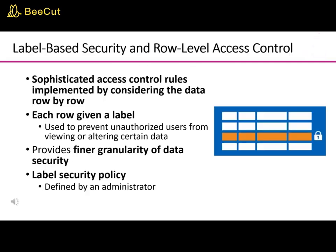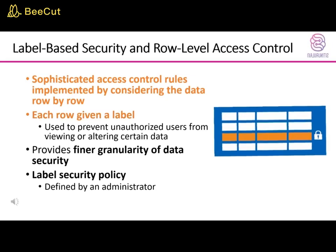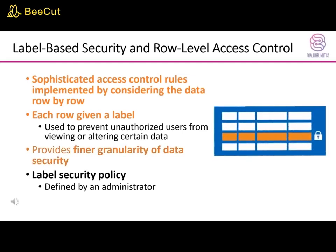Many mainstream RDBMSs currently use the concept of row-level access control, where sophisticated access control rules can be implemented by considering the data row by row. In row-level access control, each data row is given a label, which is used to store information about data sensitivity. Row-level access control provides finer granularity of data security by allowing permissions to be set for each row and not just for the table or column. A policy defined by an administrator is called a label security policy.